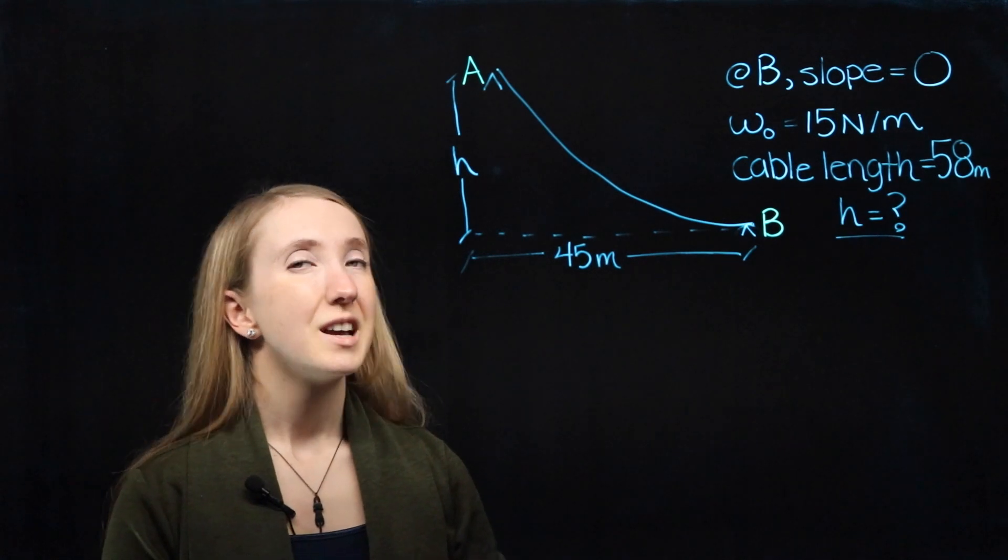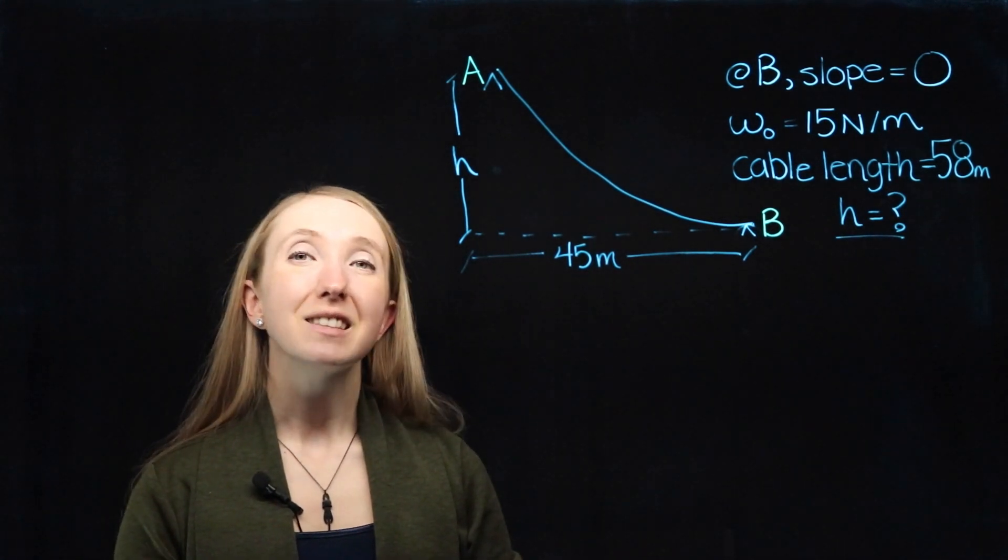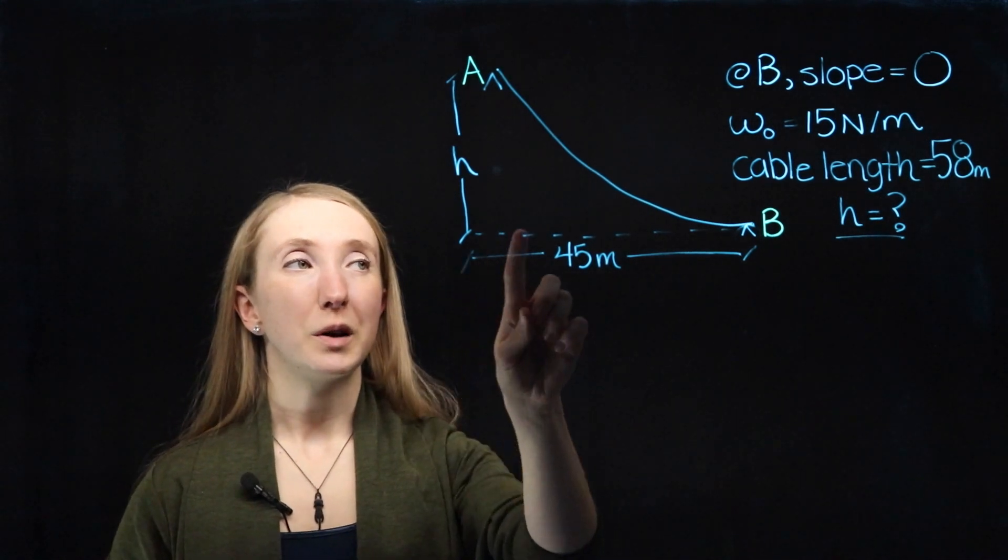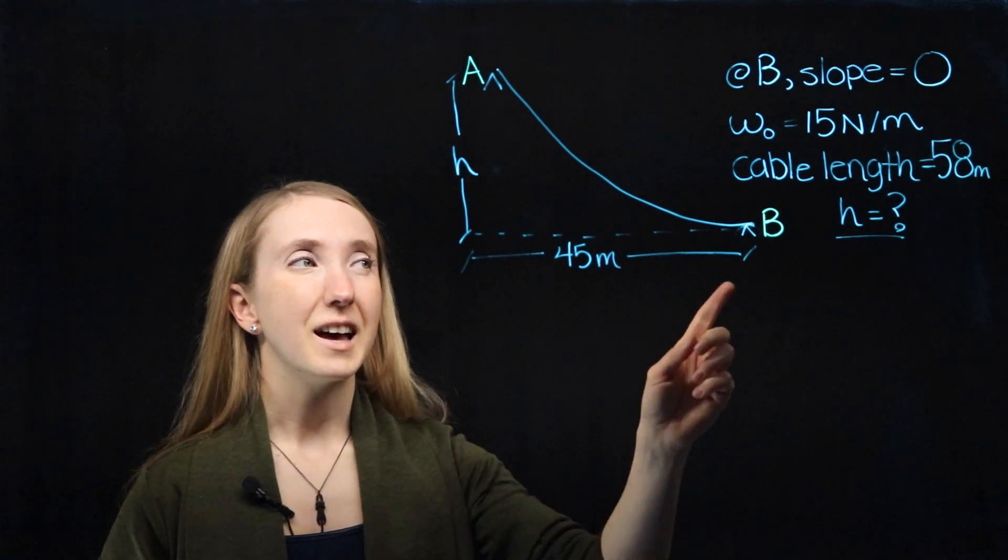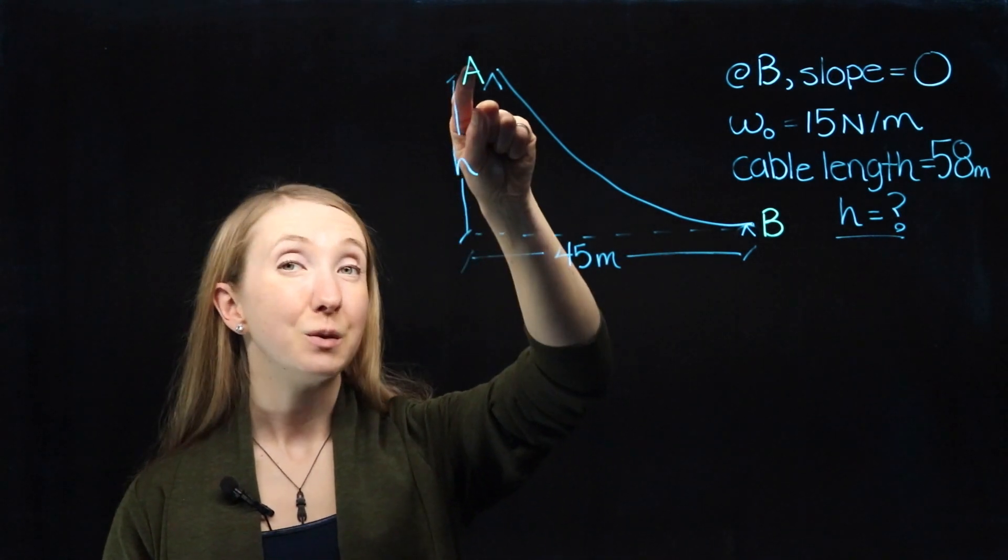We're also told that the total cable length is 58 meters and the distance of the span is 45 meters. We're asked to find the height of the cable system, so from B up to A.